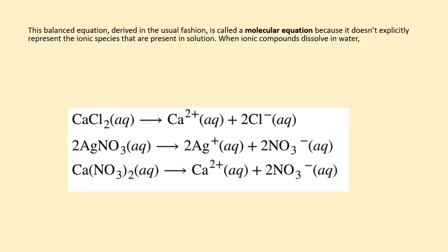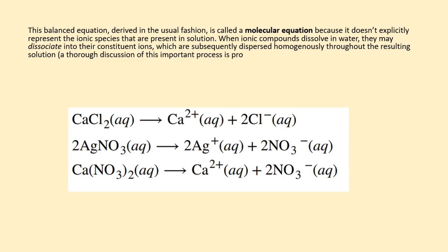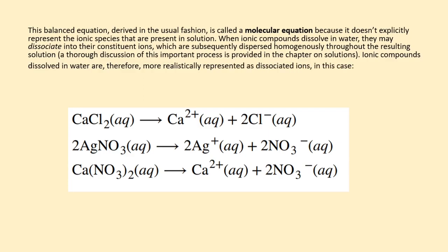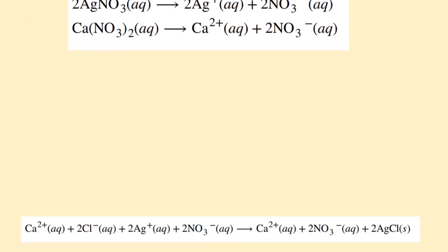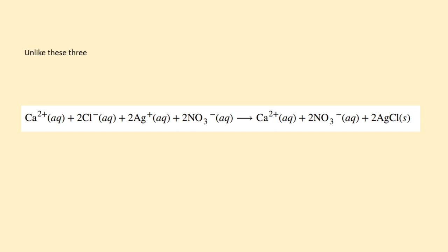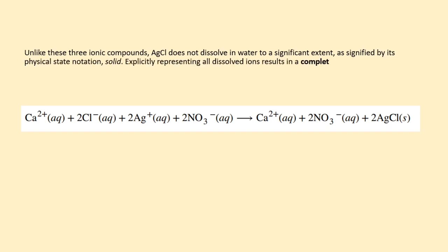When ionic compounds dissolve in water, they may dissociate into their constituent ions, which are subsequently dispersed homogeneously throughout the resulting solution. A thorough discussion of this important process is provided in the chapter on solutions. Ionic compounds dissolved in water are, therefore, more realistically represented as dissociated ions, in this case. Unlike these three ionic compounds, AgCl does not dissolve in water to a significant extent, as signified by its physical state notation, solid. Explicitly representing all dissolved ions results in a complete ionic equation.